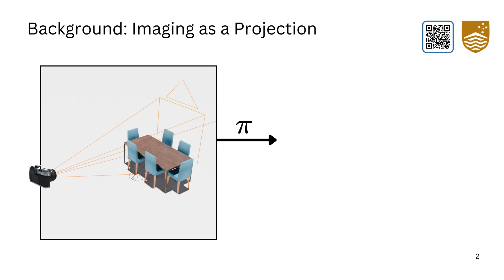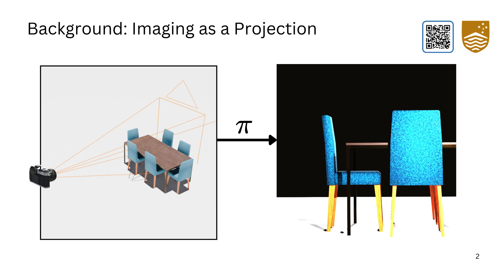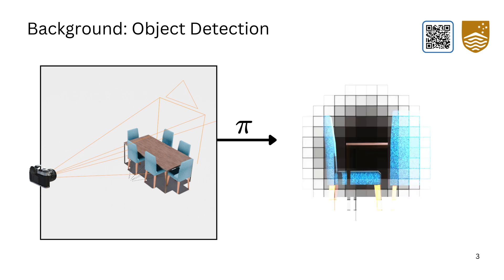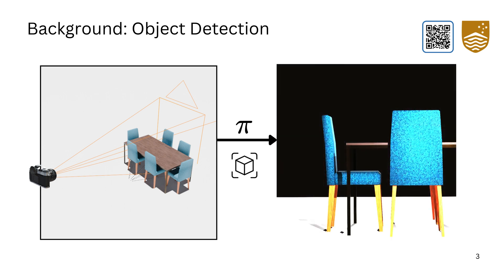First, imaging from 3D to 2D is a projection that loses information like outer frame or occluded regions. Second, object detection is a capability of modern computer vision systems which can detect objects fully or partially in frame.